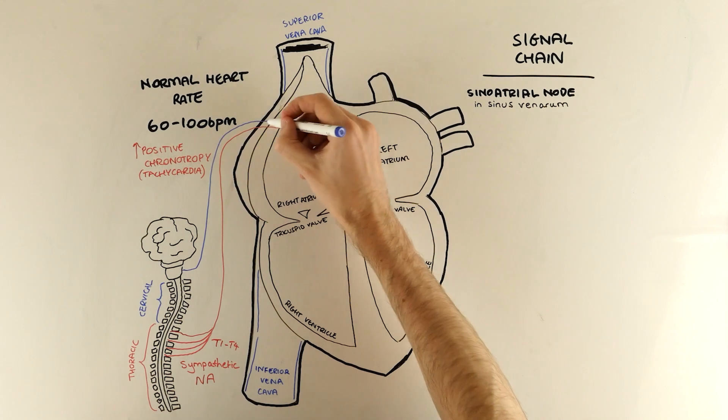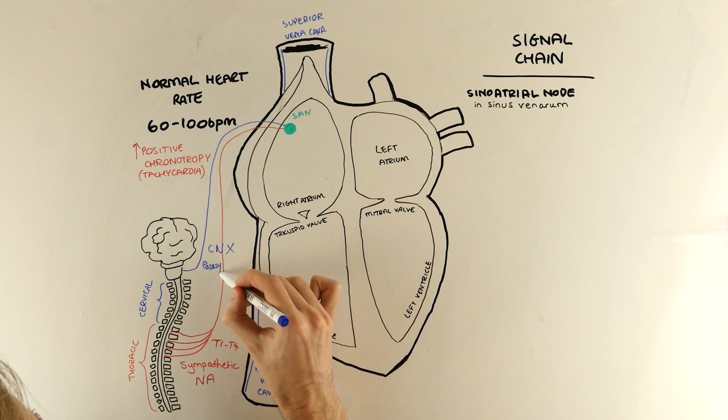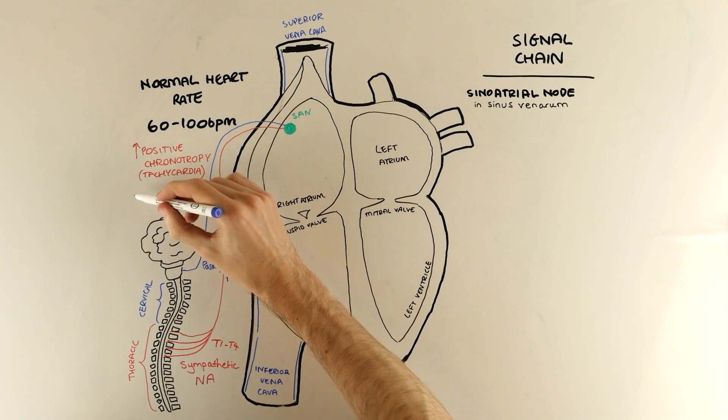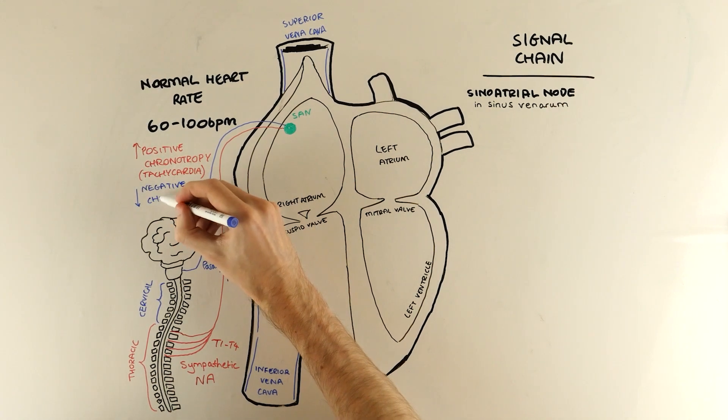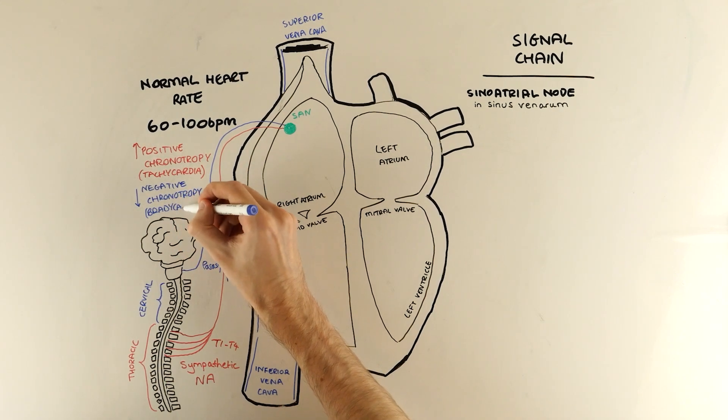Parasympathetics do the opposite and slow the heart down when we're at rest. Parasympathetic supply to the heart actually comes all the way from the brain via the vagus nerve, cranial nerve 10, and it uses acetylcholine to cause negative chronotropy and lower the heart rate. Again if it gets too slow we call this bradycardia or slow heart.